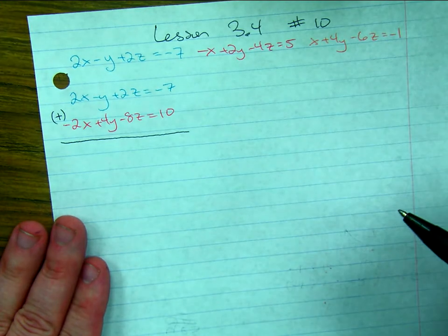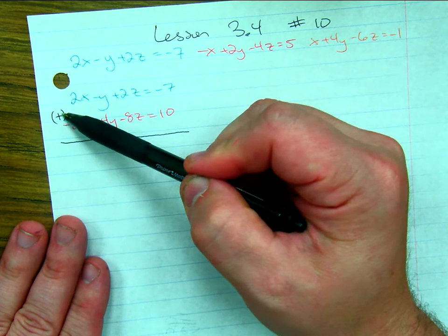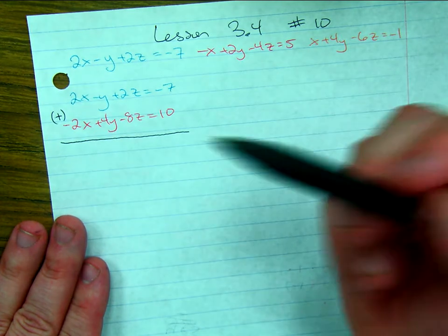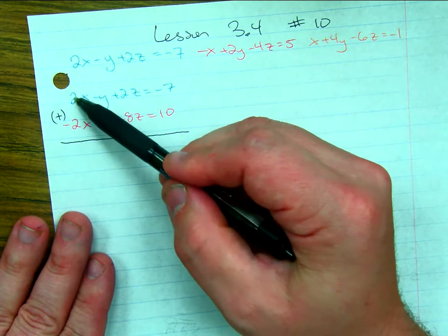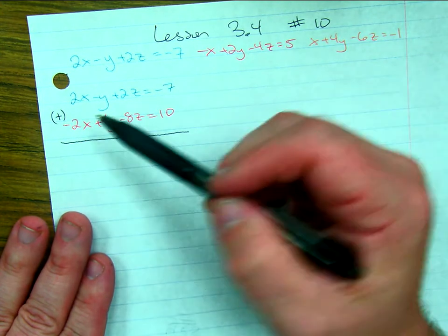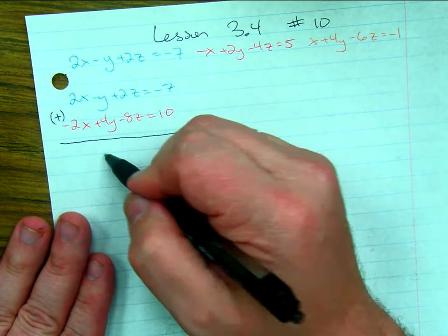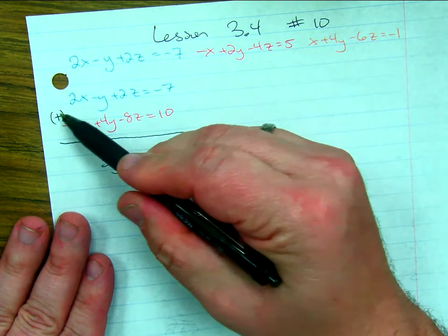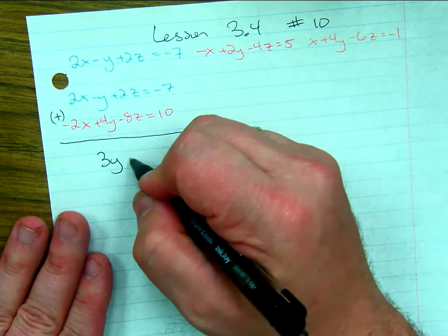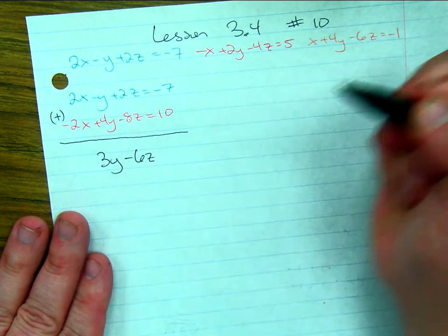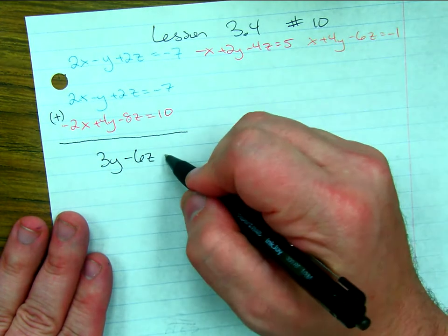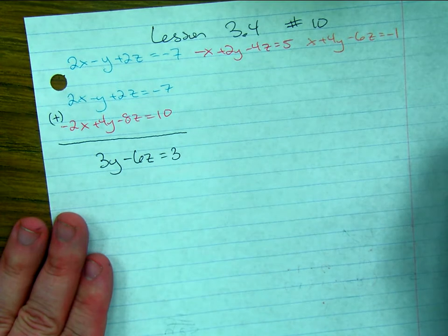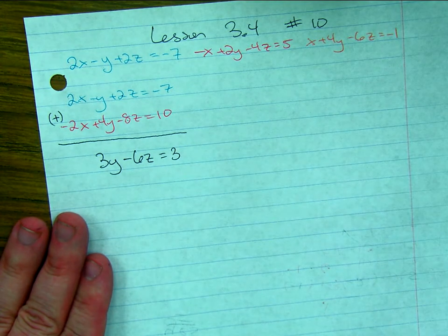And that's always an option to you. You can make them have opposite signs and add them, or the same sign and subtract. Either one. In this instance, some people like adding a lot better. When I add them together, the x's disappear. Negative y plus 4y gets you 3y. 2z plus negative 8z gets you negative 6z. And negative 7 plus 10 gets you 3. So far so good. We're down to two variables.